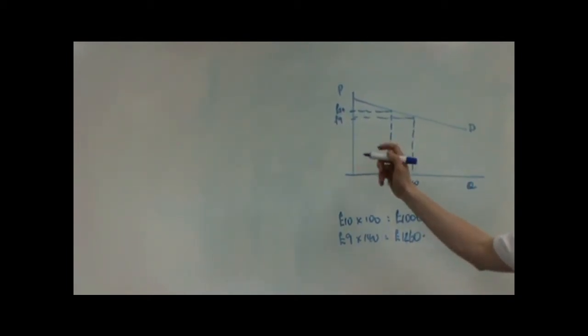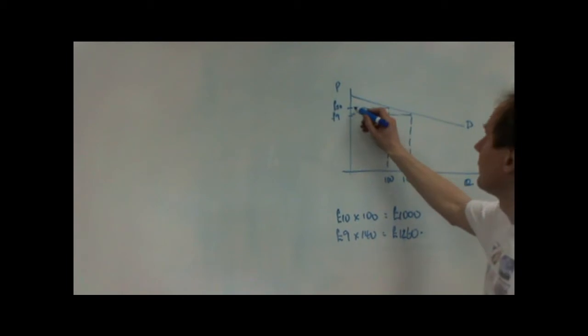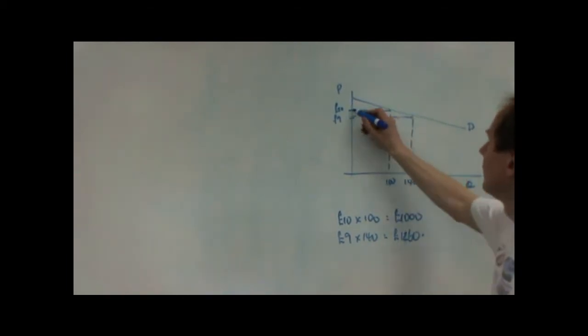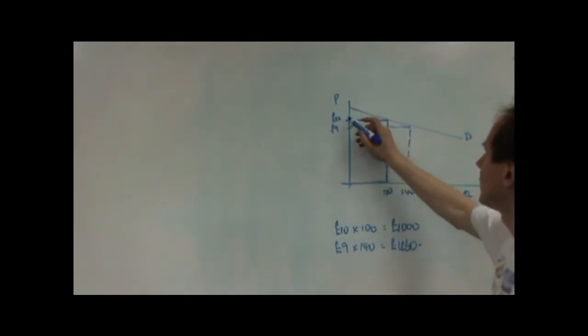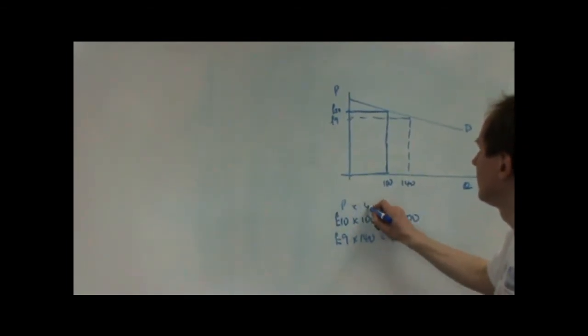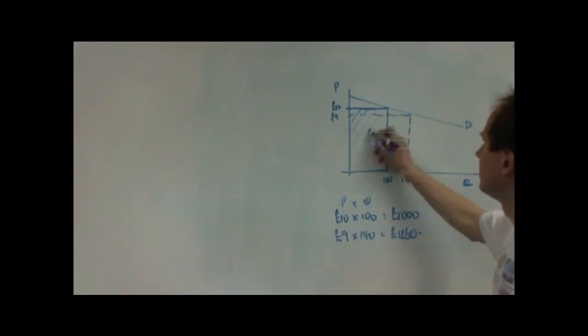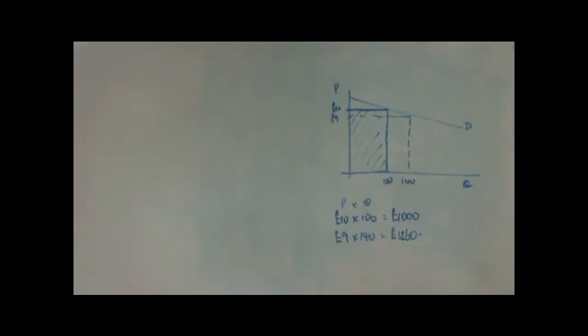So, you can also show that in area, if you like. The area originally there was the area price times quantity. So, that area there was the firm's revenue originally.